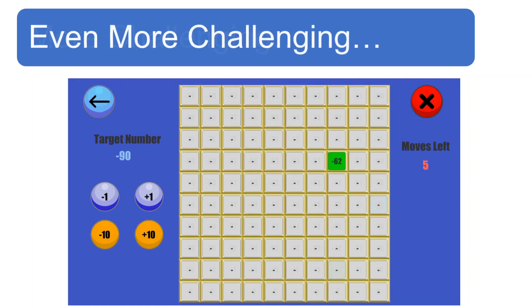At kung sa mas advanced level pa, wala nang number sa grid. Paano mo kaya maaabot ang target na negative 90? Hindi rin madali at kailangan talagang mag-isip. Yan ang purpose ng app na mapaisip ang studyante habang naglalaro sila. At syempre, matututo sila.